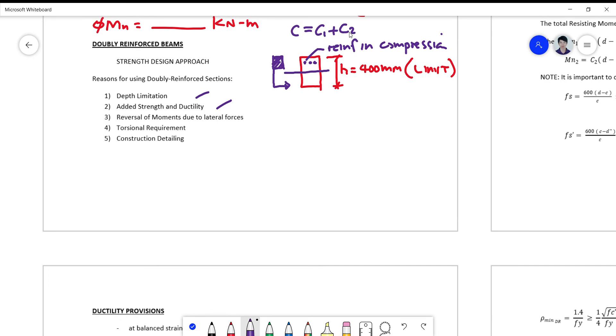and C2 is the compression contribution of your concrete reinforcement. So another thing, another reason is for reversal of moments. So sometimes due to earthquake or due to lateral forces like wind and earthquake,